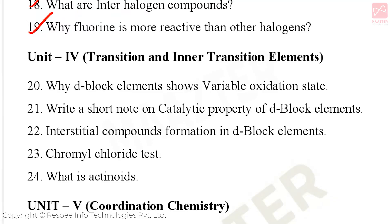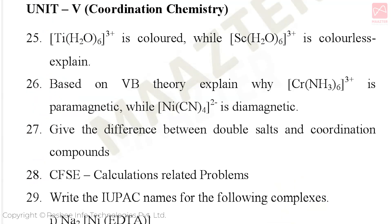Unit 4: Transition and Inner Transition Elements. Important questions: why do d-block elements show variable oxidation states, write a short note on catalytic property of d-block elements, interstitial compound formation in d-block elements, chromyl chloride test, and what are actinoids. These are very important 2-mark and 3-mark questions.